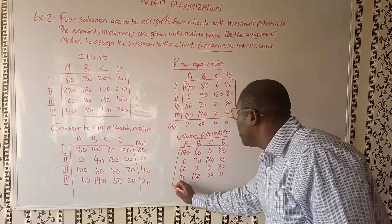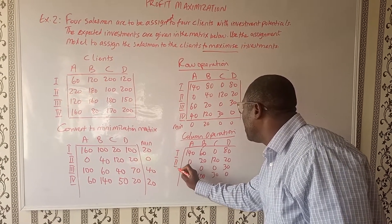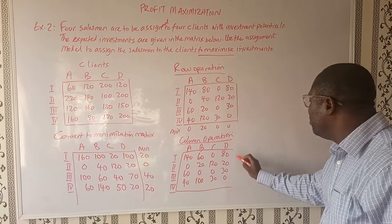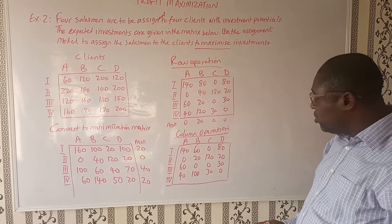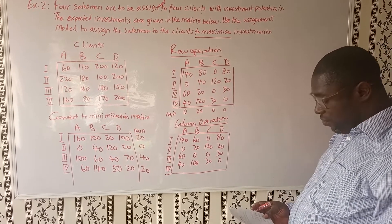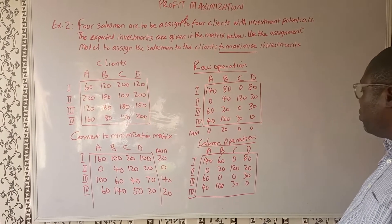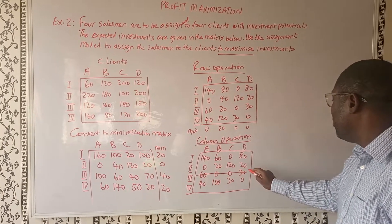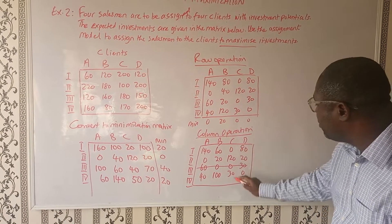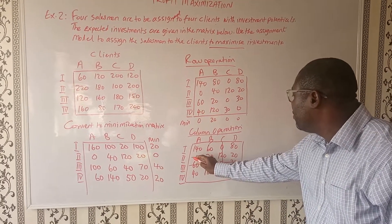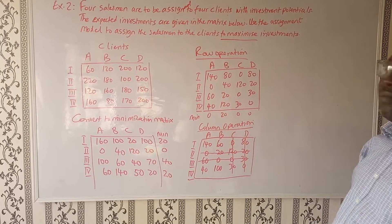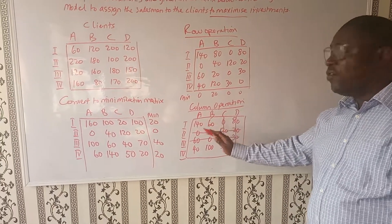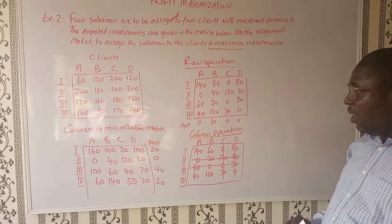Now the next thing we do is find out how many zeros we can cover effectively. We have one line covering two zeros here, one line here, two zeros here, then three, and then four. We've covered all the zeros with four lines. We have a four-by-four matrix, so this is an optimum assignment.